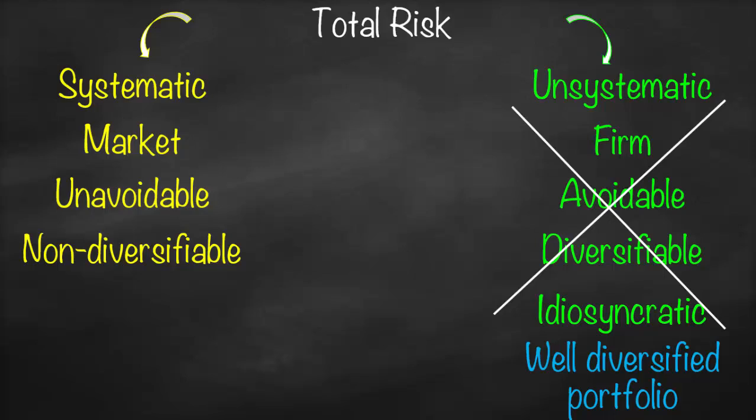We can avoid unsystematic risk if we have a well-diversified portfolio — meaning we invest in different sectors and within each sector we invest in different companies. As a result, we'll end up exposed only to systematic risk. So how do we measure systematic risk? It is measured through beta.